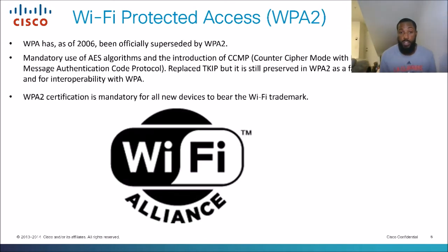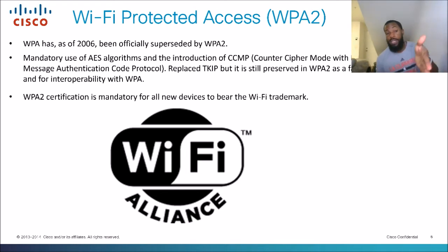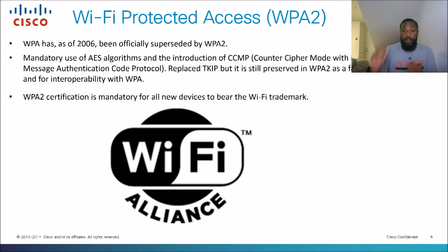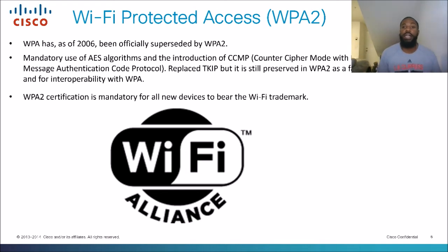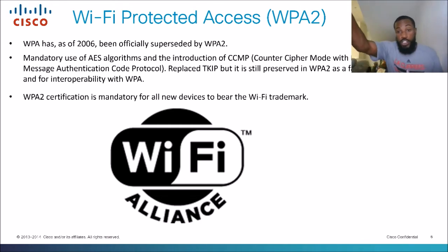WPA had vulnerabilities too, and hackers were able to crack into it. So they came out with WPA2, which is pretty much the standard right now. WPA was superseded by WPA2 since 2006. WPA2 requires the mandatory use of AES. There's also CCMP — not to be confused with CCNP — which replaced TKIP, but TKIP was still preserved in WPA2 as a fallback for backwards compatibility.